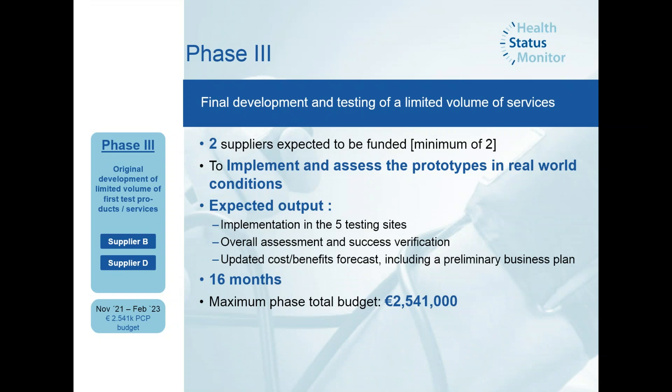Phase three is the piloting phase — the big phase where much of the research takes place. We aim to realize implementation of pilot solutions in the testing sites of all five procurers with two different solutions. The indicative budget is roughly 2.5 million euros. At the end of the phase, an overall assessment and success verification, as well as an updated cost-benefit forecast including a preliminary business plan, should be provided by the suppliers. For the pilots, we are aiming to execute with 50 patients and around 10 healthcare professionals in each of the pilot sites per solution — 250 patients and around 50 healthcare professionals in total per solution.